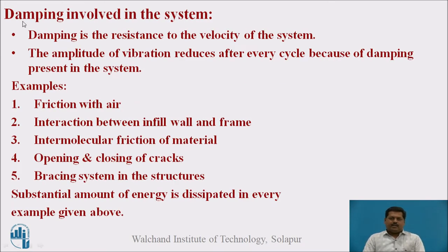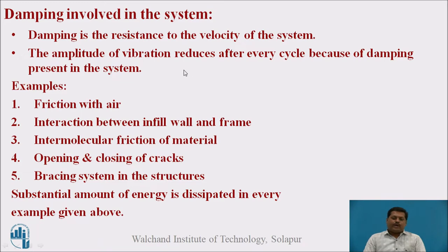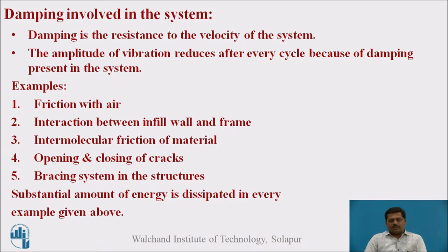Now let us see how damping is involved in the system. Basically, damping is the resistance to the velocity of the system when the system is under motion. The resistance offered by some phenomena against the velocity is called damping. Practically, we can identify whether damping is present or not by observing that the amplitude of vibration after every cycle will reduce — successive amplitudes are smaller than earlier amplitudes. This decay in successive amplitude is observed because of the damping present in the system.